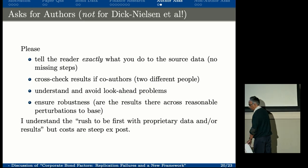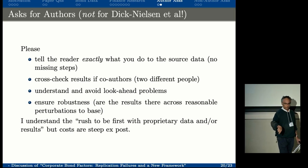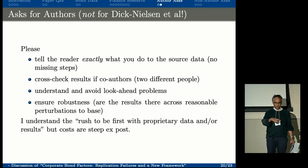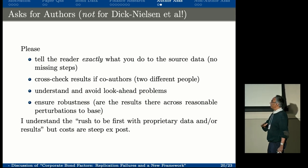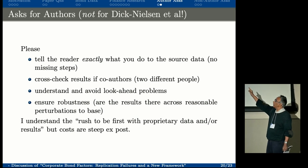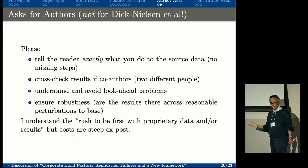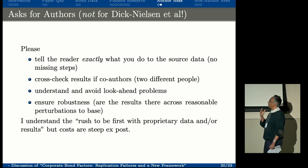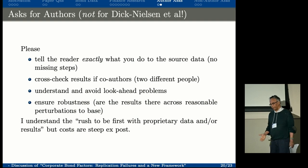To summarize: if we don't address these issues, we'll get into the embarrassing situation again where people surround themselves with doubt. There are tons of papers that do these things—I think it's often not even deliberate; in the rush, you just forget to say things or forget to think carefully. But we can't let that happen because we'll destroy ourselves in the end. For authors: please tell the reader exactly what you do; if you have more than one co-author, cross-check the regressions between authors; don't just accept the results. Please understand and avoid look-ahead problems, which have become pervasive. Ensure robustness so you don't get embarrassed later. The ex-post costs are steep, as we are finding out when things don't replicate.